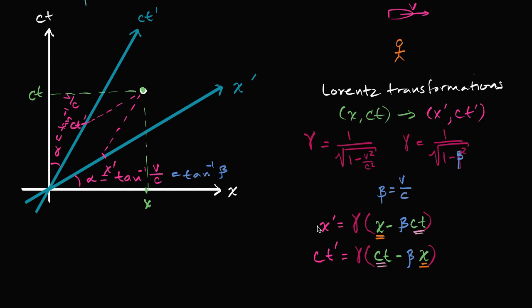So let's pick the scenario in which our friend passes us by — this is the same scenario we've been doing in previous videos — with a relative velocity, from my frame of reference, at half the speed of light. She is moving in the positive x direction, and our spacetime diagrams coincide at the origin.